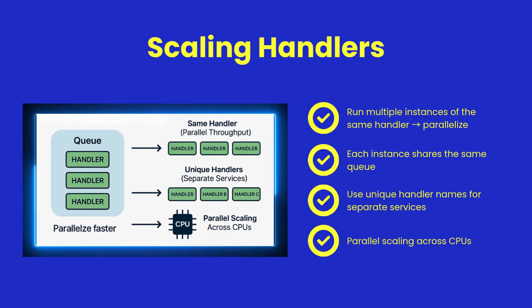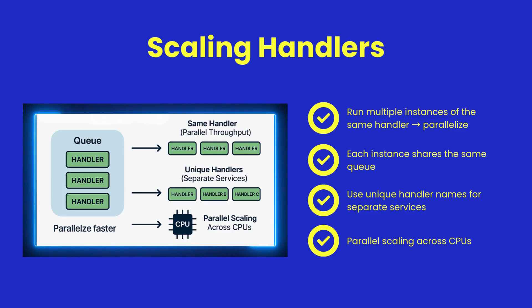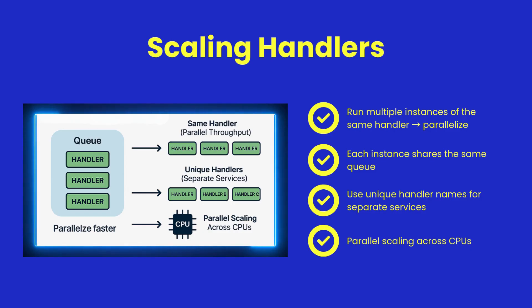FastCGI handlers scale easily. You can start multiple copies of the same handler for parallel throughput, or run different handlers with unique names for separate services. On multi-core systems, this scales linearly with hardware.